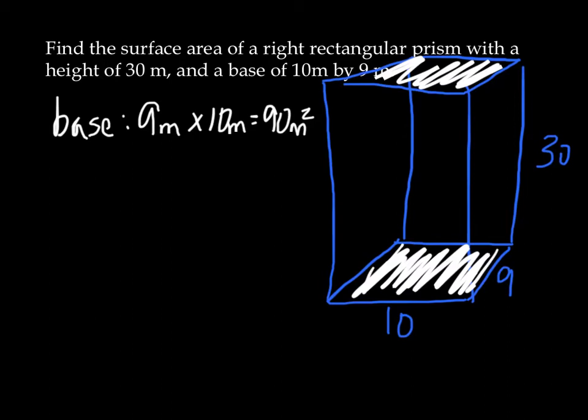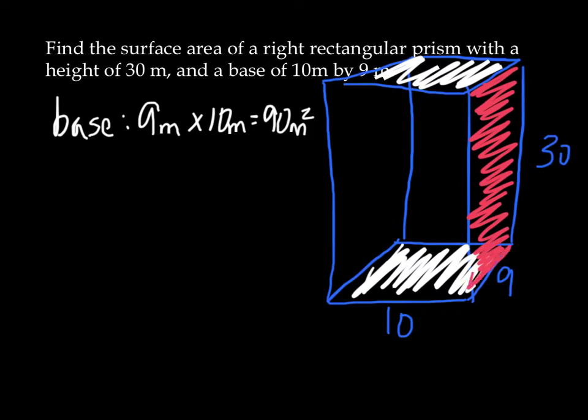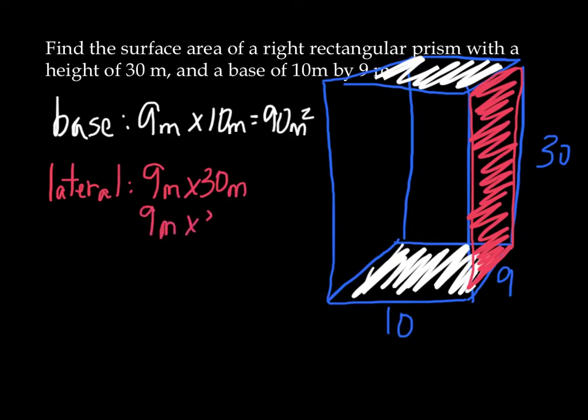Then we also have what's called a lateral area. I have a rectangle on this side, which is 9 meters by 30 meters. So for the lateral rectangles, I have one rectangle 9 by 30. We'll calculate that in a moment. We have a second rectangle that's 9 by 30 on the other side of the prism.